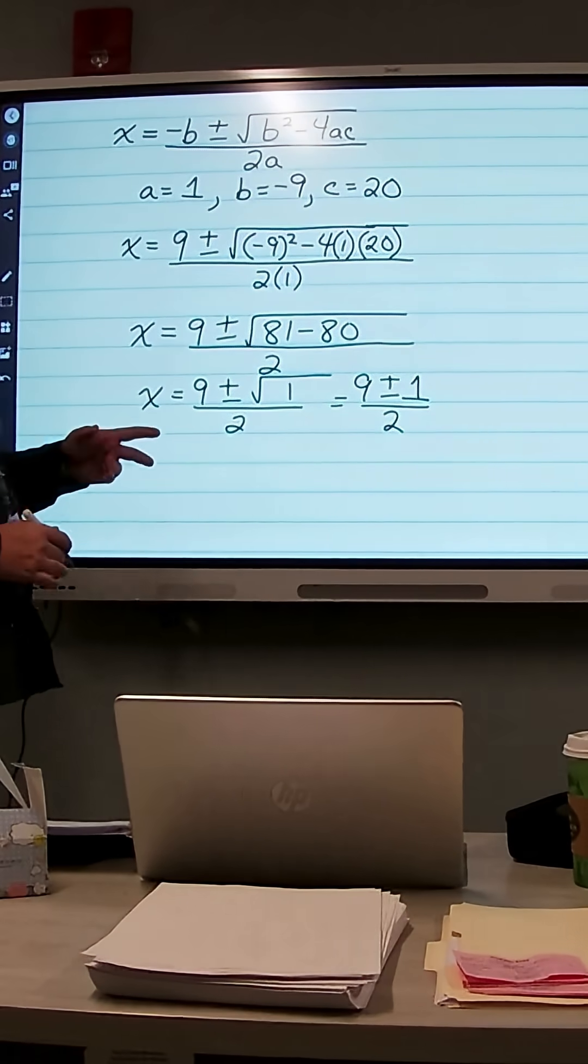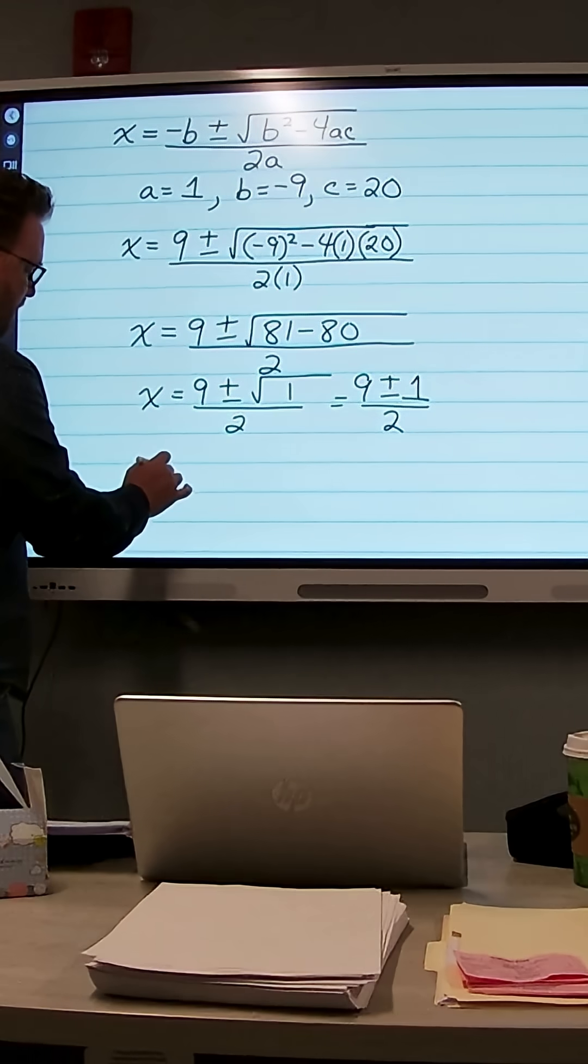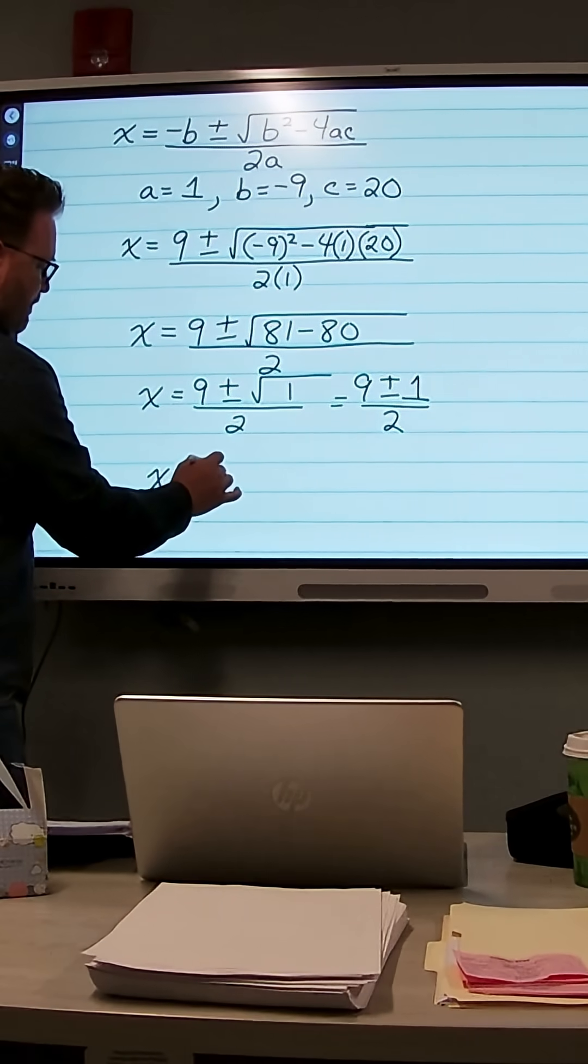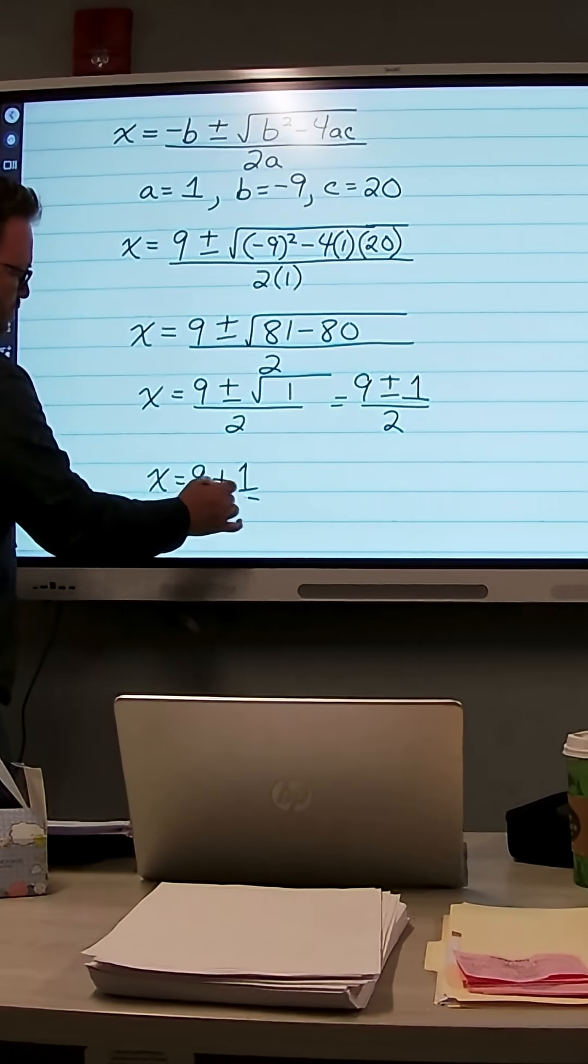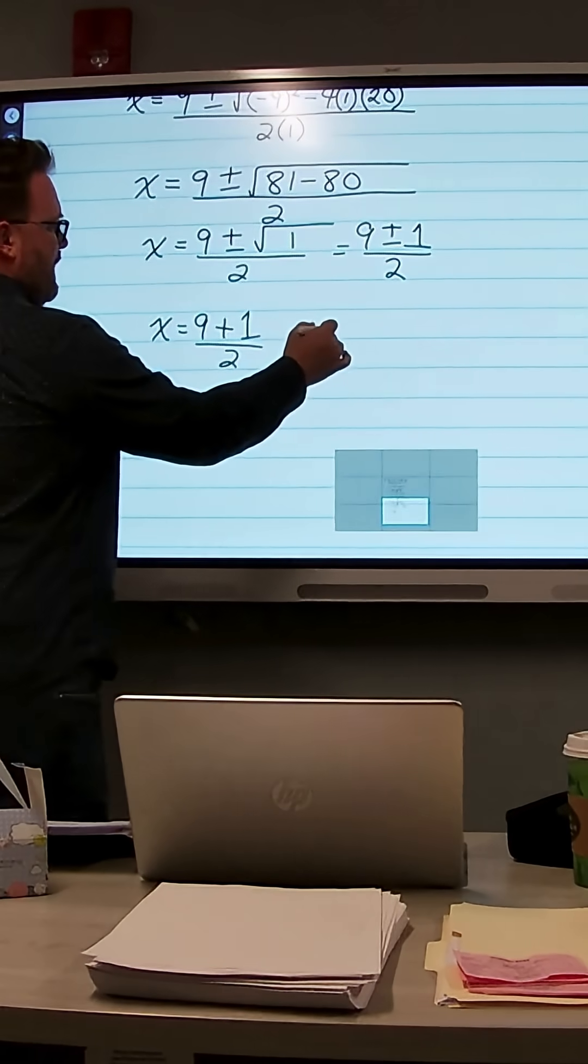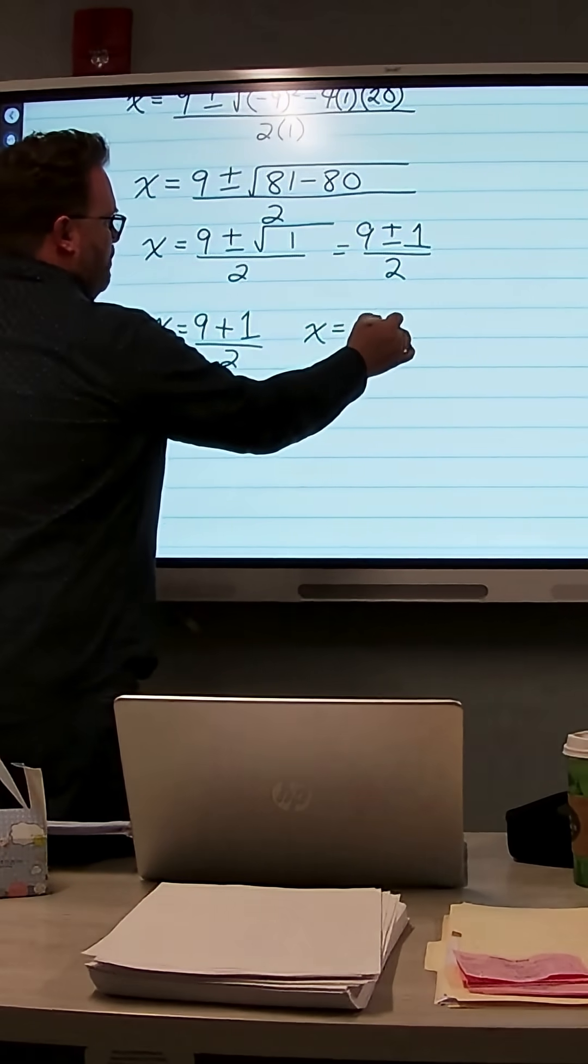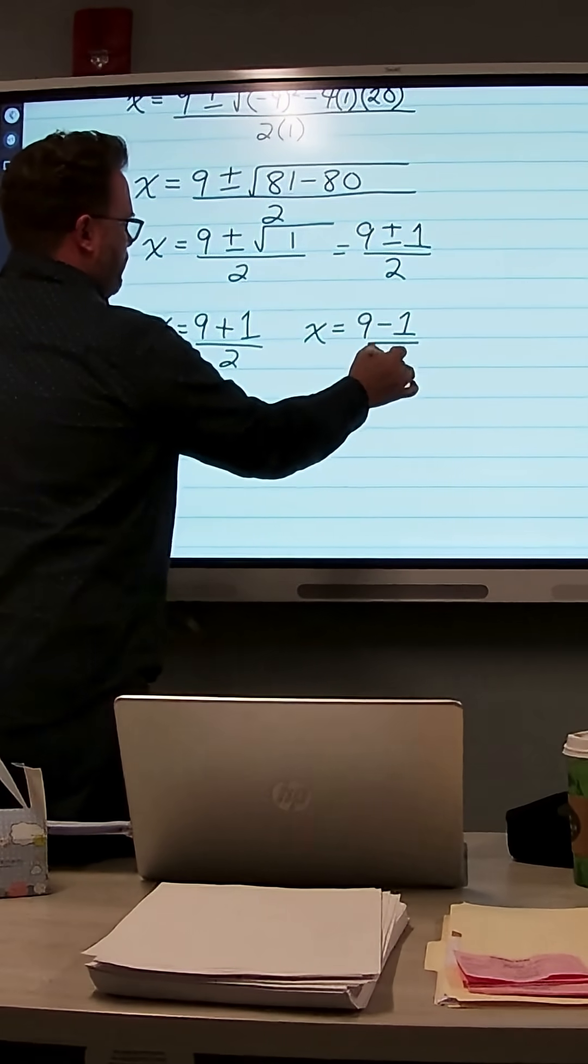So the plus or minus indicates two solutions. So first solution, x equals 9 plus 1 over 2. Second solution, x equals 9 minus 1 over 2.